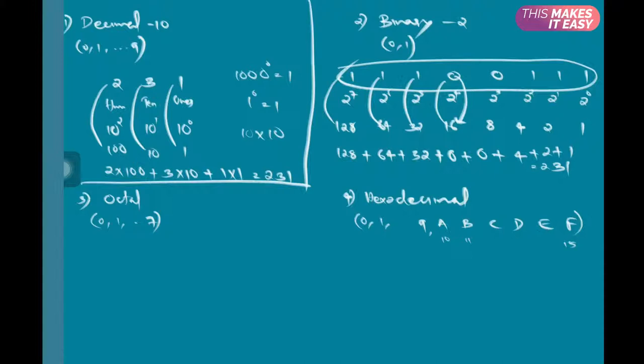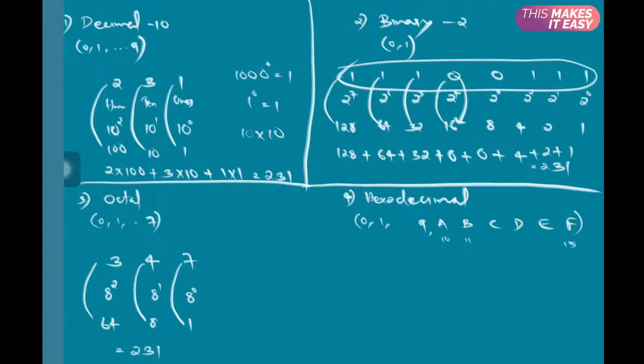Now let's check an octal number system. For example, I have octal number 347. The base here is 8: 8 to the 0, 8 to the 1, 8 to the 2. This is 1, this is 8, this is 64. If you multiply 3 times 64 plus 4 times 8 plus 7 times 1, again you will get 231.